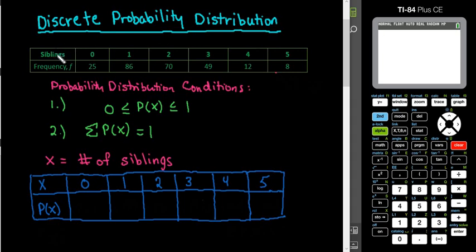The data that we have, the random variable x that we are dealing with is the number of siblings. Of the people that were polled, there was 0 through 5 siblings, and listed below each of those is the frequency that they occurred in the sample that was taken.